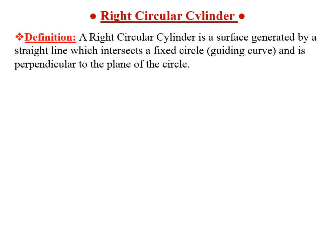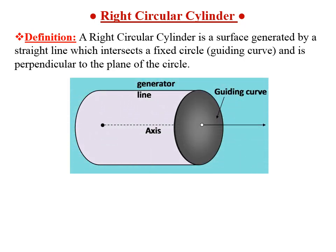One of the important topics of this chapter is the right circular cylinder. Let us begin with its definition. It is a surface generated by a straight line which intersects a fixed circle, also known as a guiding curve, and is perpendicular to the plane of that circle. Here we have the figure of the right circular cylinder, showing the generator line, the axis, and the guiding curve — three important elements to generate a cylinder.